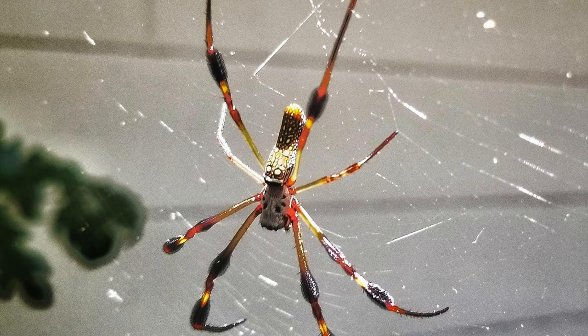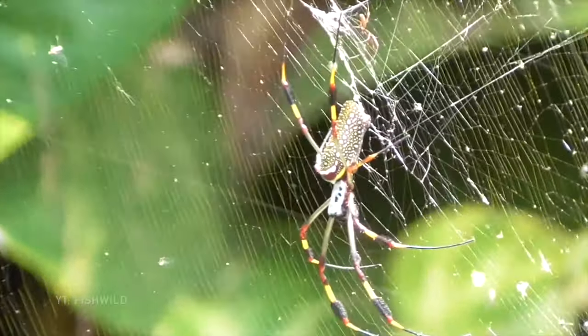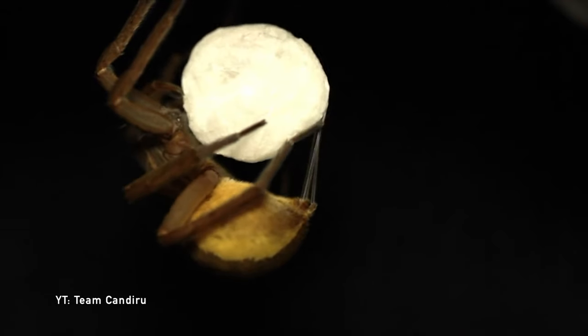Over 40,000 species of spiders, the order Araneae, have evolved to use silk for building nests, catching prey, and protecting offspring.